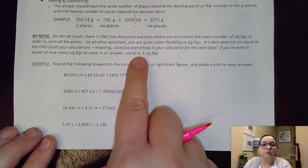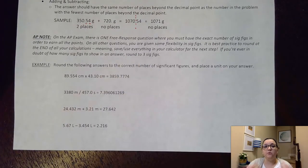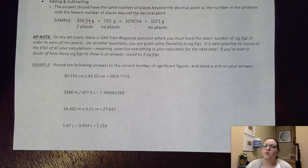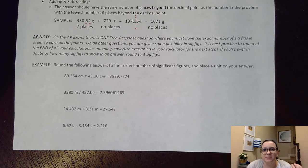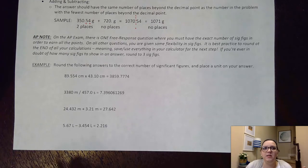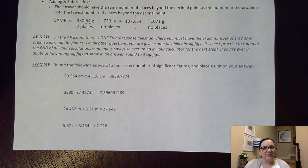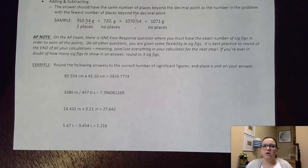There is one free response question where you must have the exact number of sig figs to earn the point — they could give you a calculation problem or a reading equipment problem and score that one question for sig figs. The good news is it's only one point out of however many points the test is. However, we don't want to annoy the AP grader — if a question only needs three sig figs and you're showing 20, the grader is going to question everything you're doing. We want to look confident when answering AP questions and always try to report things to correct sig figs, but don't overly freak out because it's only one point.